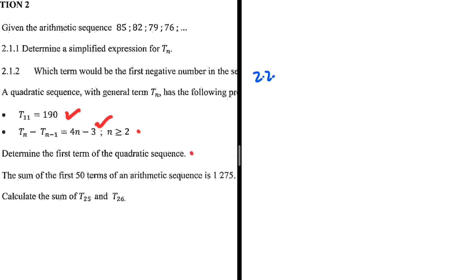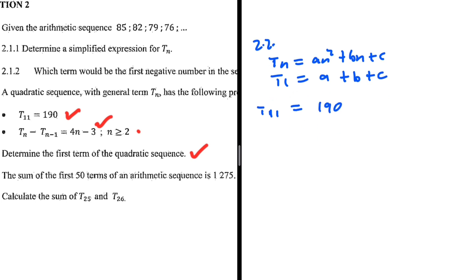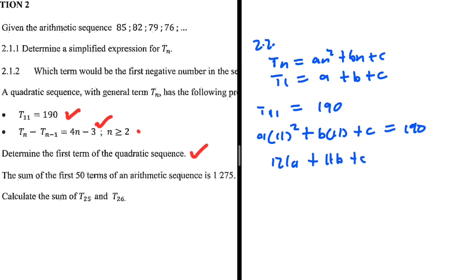We need to determine the first term of the quadratic sequence. Using tn = an² + bn + c, we want t1 = a + b + c. Starting with t11 = 190: a(11²) + b(11) + c = 190, which gives 121a + 11b + c = 190.